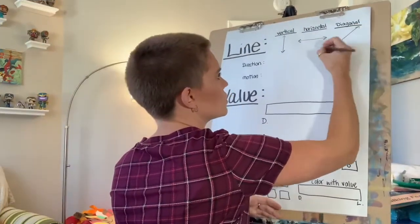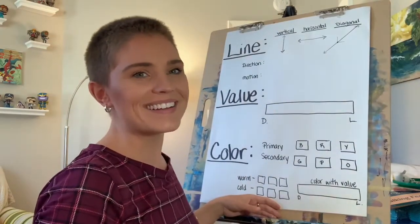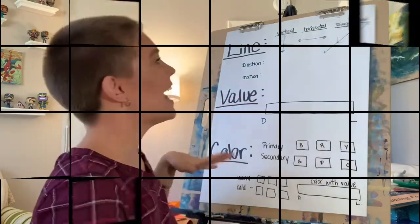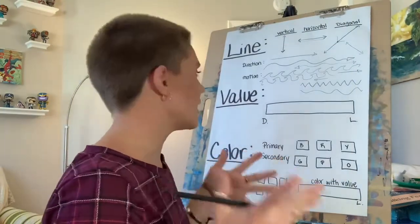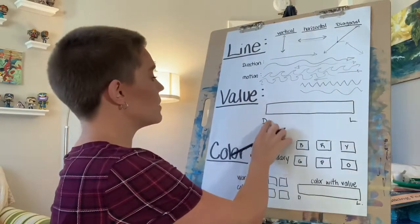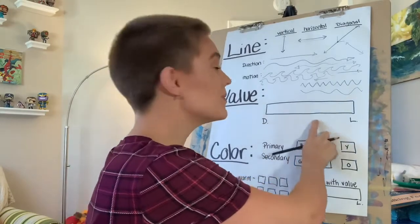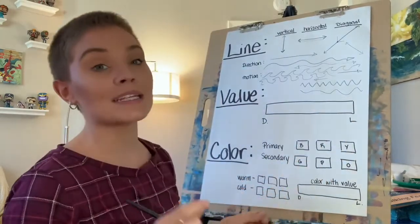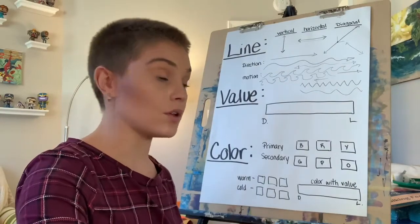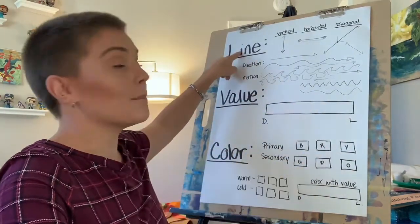Almost like a cross to the corners — do you think that would be a diagonal line? Yeah, absolutely. We have our diagonal line. Now you might ask, what is value? Well, you'll see here I have a D and I have an L. So value must be our darkest dark to our lightest lights. I'm going to go ahead and create that sense of value, darkest dark to lightest light, using my lines.